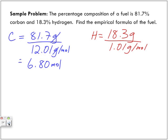And then for hydrogen, what do we get? 18.12. 18.12 moles. So right now, as it lies, the formula will be C 6.80, H 18.12.